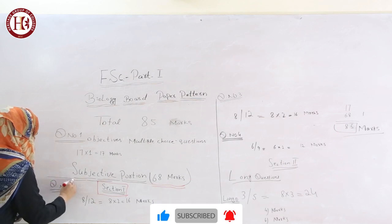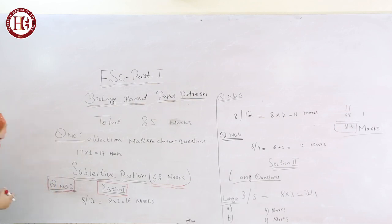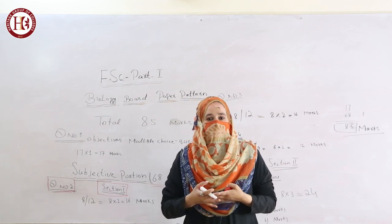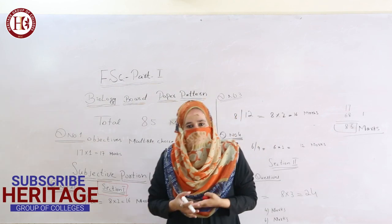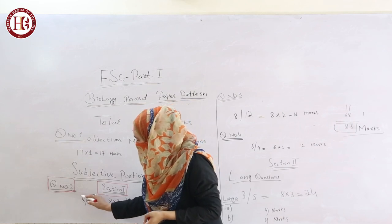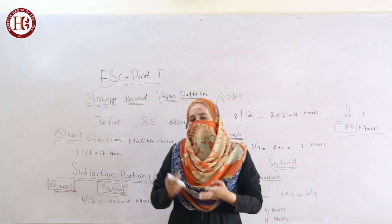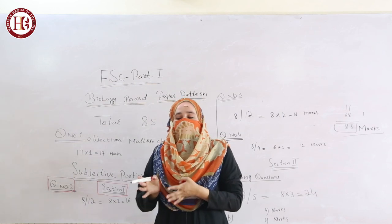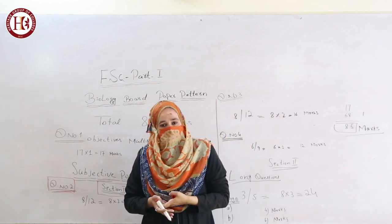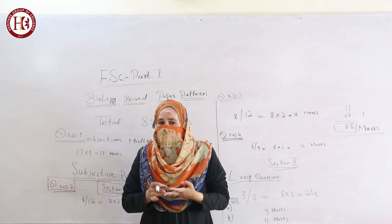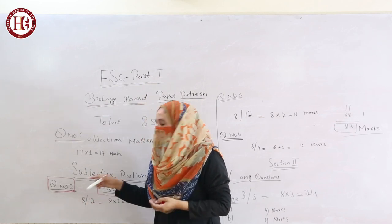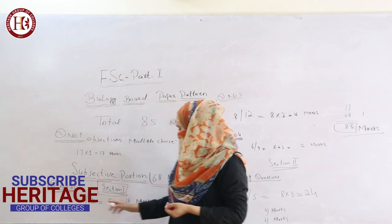The first portion is Question No. 2, which has Short Questions. There are 12 short questions, out of which you have to solve any 8. Every short question is worth 2 marks. The length of each short question answer should be 2 and a half to maximum 3 lines. If you include an example, that will be even better. So 8 short questions at 2 marks each gives you 16 marks.